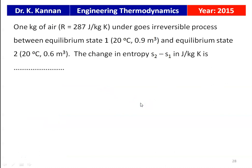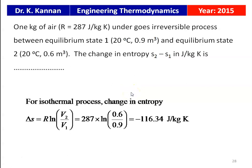From the 2015 question paper: 1 kg of air (R = 287 J/kgK) undergoes an irreversible process from state 1 (20°C, 0.9 m³) to state 2 (20°C, 0.6 m³). Since temperature is constant, this is isothermal. ΔS = R·ln(V2/V1) = 287 × ln(0.6/0.9) = −116.34 J/kgK.